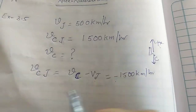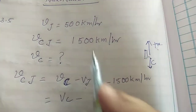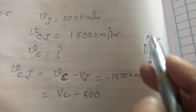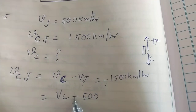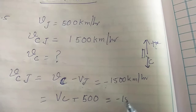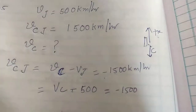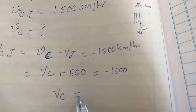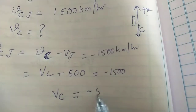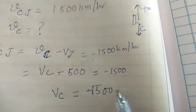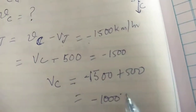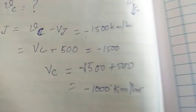Now we substitute the values. V_C with respect to ground equals V_C with respect to jet plane plus V_J. V_J is plus 500 km per hour (upward, positive). So: minus 1500 plus 500 equals minus 1000 km per hour. The combustion products' velocity with respect to the ground is minus 1000 km per hour.